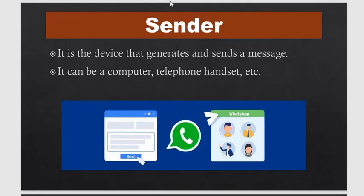دوسرا component ہے sender۔ Sender کا اردو میں مطلب ہوتا ہے بھیجنے والا۔ بھیجنے والا وہ شخص یا device ہوتا ہے جو پیغام کی ابتدا کرتا ہے اور اسے مناسب طریقے سے encode کرتا ہے۔ جیسے کسی TV broadcast میں broadcaster بھیجنے والا ہوتا ہے۔ یہ دوسرا component ہے communication system کا۔ It is the device that generates and sends a message — it can be a computer, telephone, or handset۔